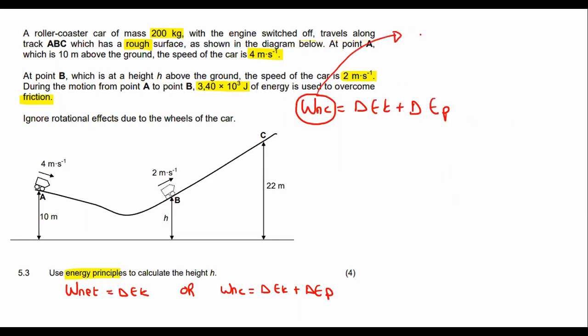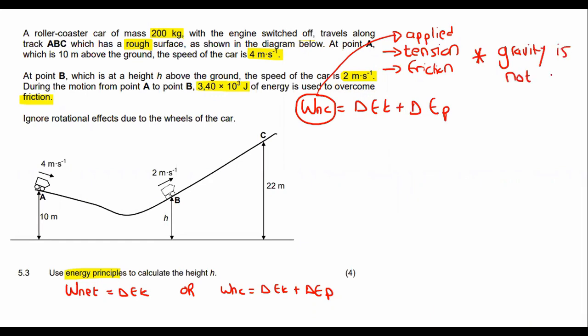Non-conservative forces are things like applied forces, tension, and friction. Remember that gravity is not a non-conservative force, so you don't use gravity over here. If you were using the W_net formula, then you could use gravity—that's the difference.